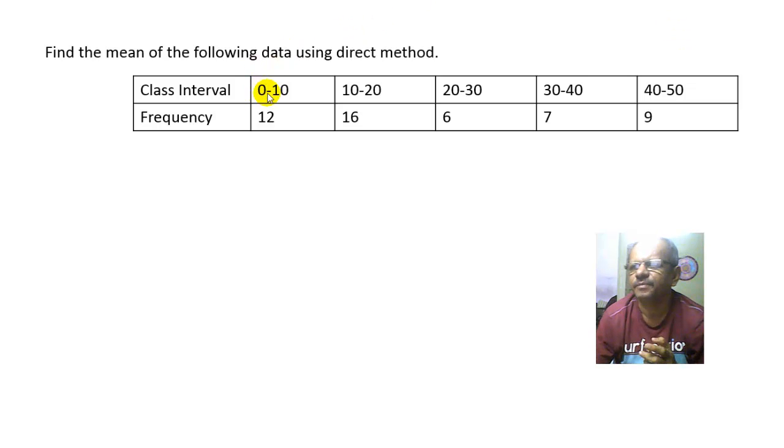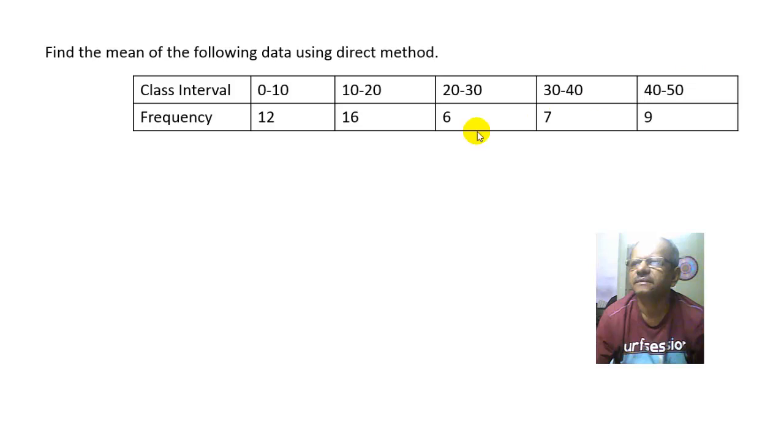The given data is class interval 0 to 10, 10 to 20, 20 to 30, 30 to 40 and 40 to 50. And the consequent frequencies are 12, 16, 6, 7 and 9. We have to find the mean of this data.